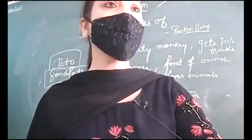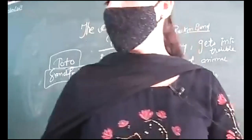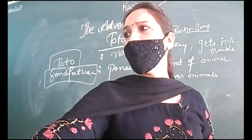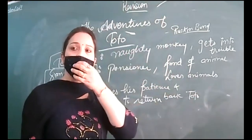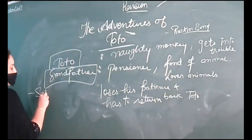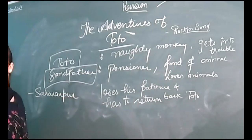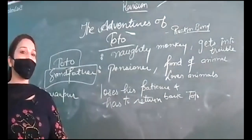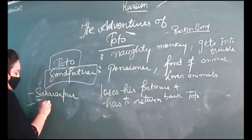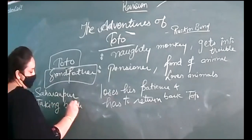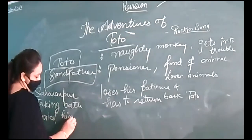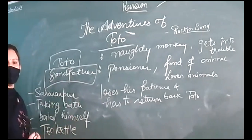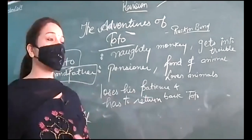His mischievousness was crossing the limit day by day, so such mishaps and accidents started occurring. It was so drastic — he boiled himself because of his mischievousness using that boiling water. He was injured badly. The incidents shared are: the Saharanpur journey where he was hidden in a bag, and the tea kettle bathing incident where he almost boiled himself.